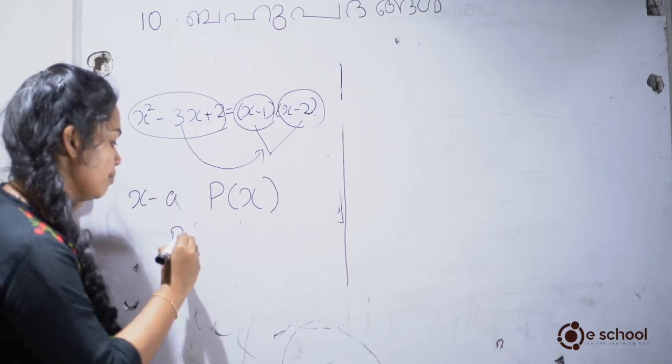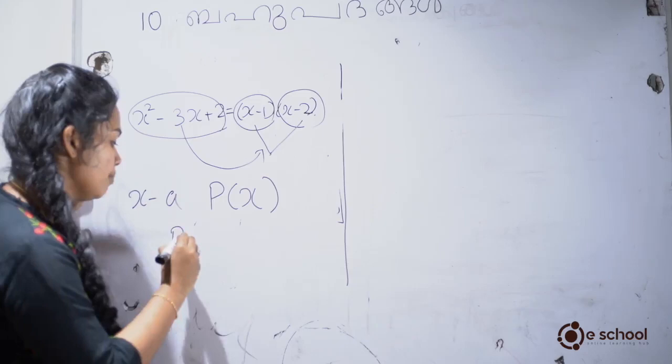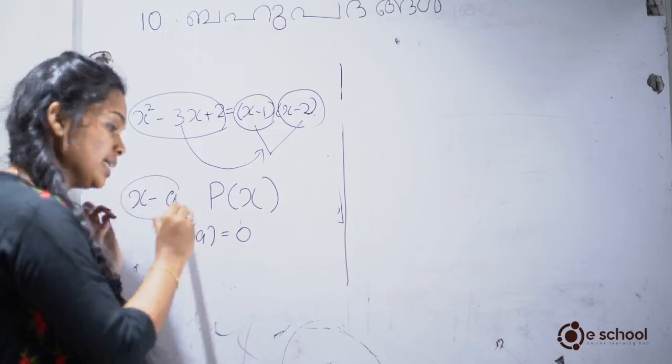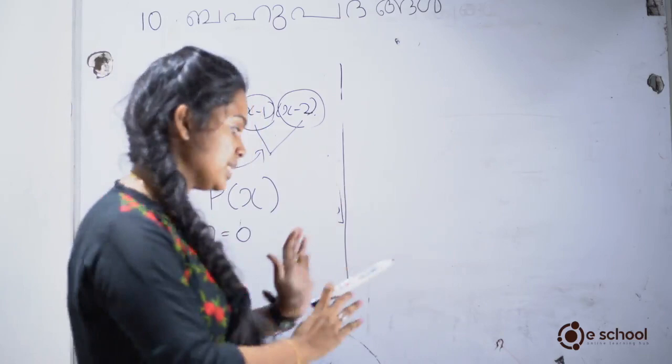This is p of x. The key idea is that p of a equals 0, which means x minus a equals 0. So x minus a is a factor of p of x. We will solve a few problems in this chapter.